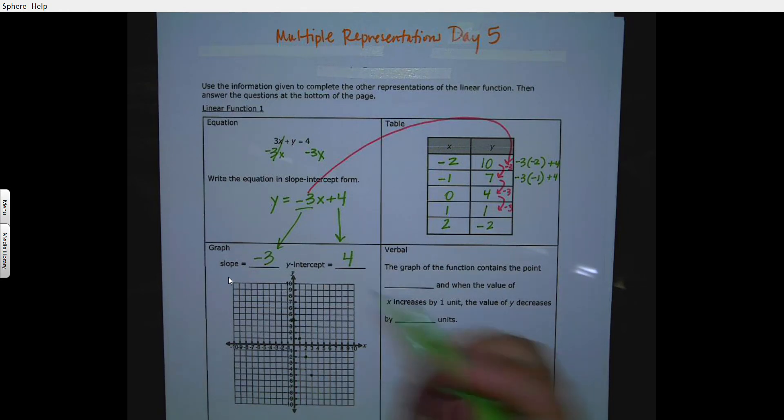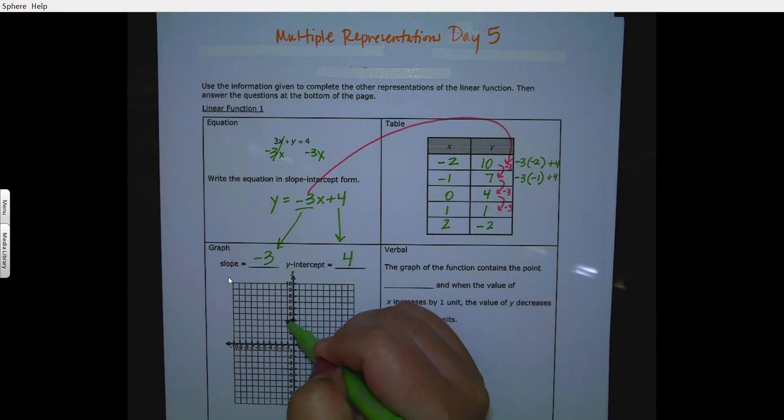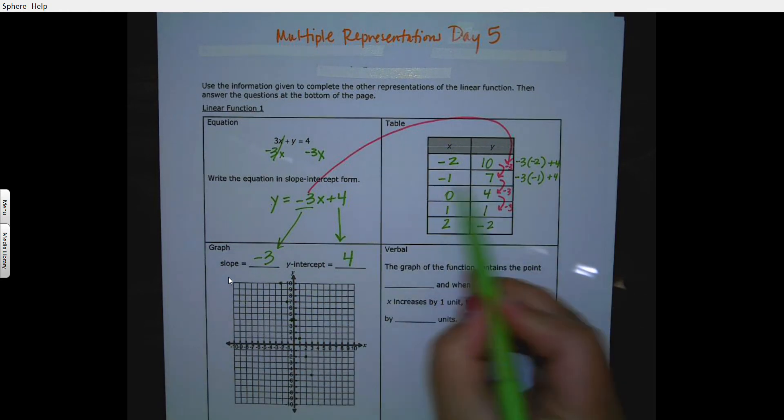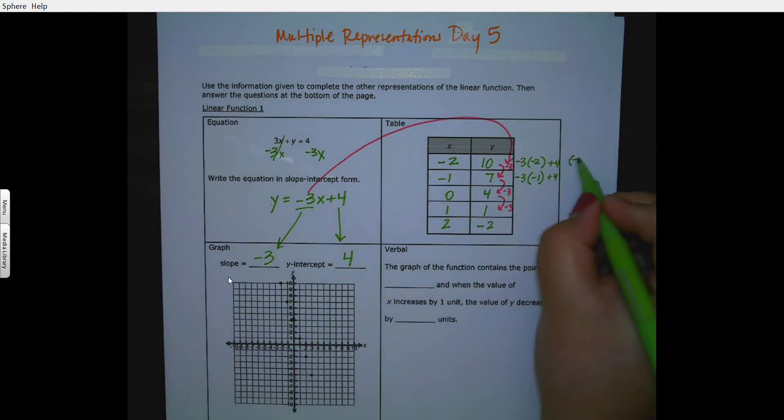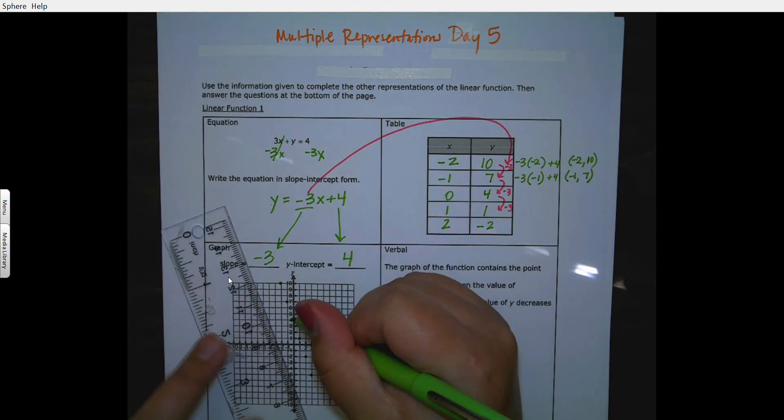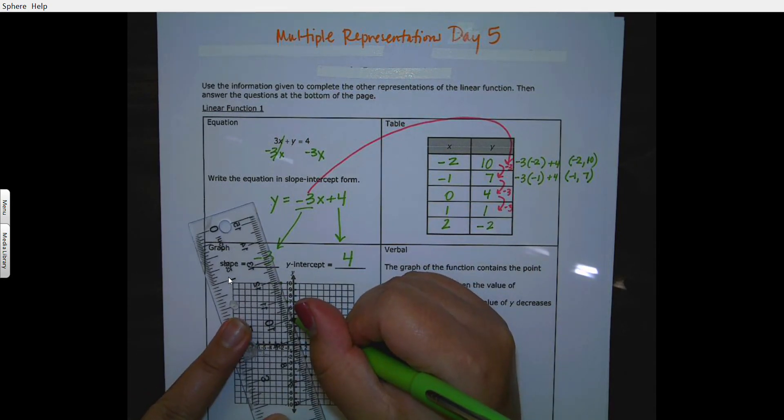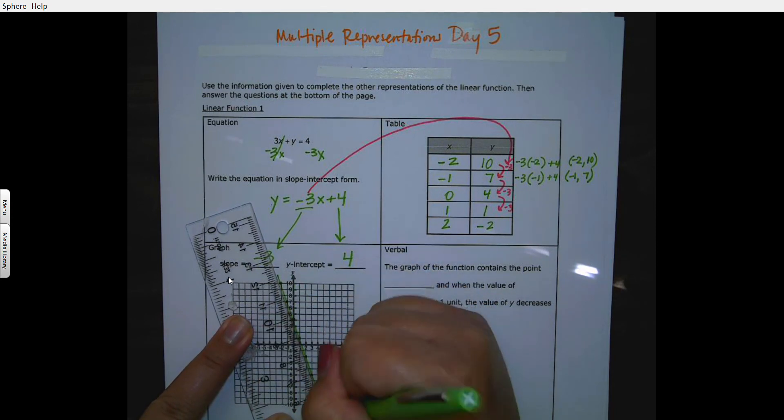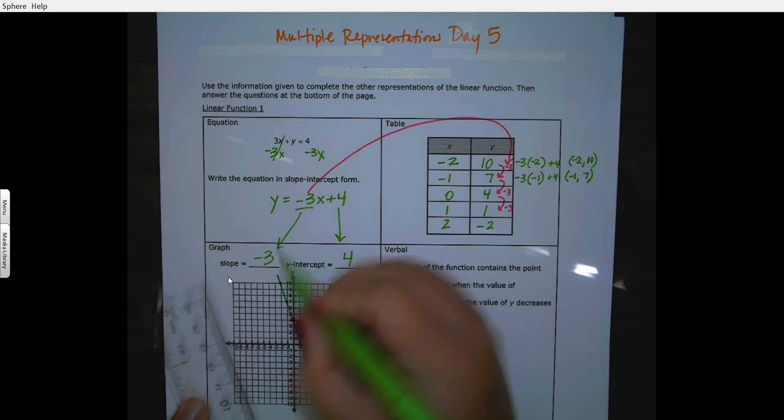Now if I want to go up, I can go back 1 and up 3, or up 3 back 1. I could also use these ordered pairs here. Negative 2, 10, so I go to negative 2, 10, go 1, 7, 0, 4. I'm going to draw my line. This is linear. I'm in slope-intercept form, so I have a nice straight line, not like yesterday where we had a curve.